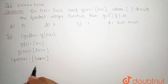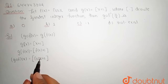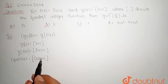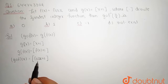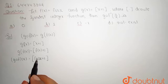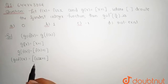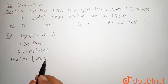First we check the continuity of gof(x). Because if our function is not continuous at x = π/2, then it is definitely not differentiable. We know the fact that if a function is not continuous, then it is definitely not differentiable. So the best way is to first check the continuity of this function.